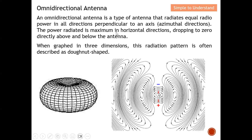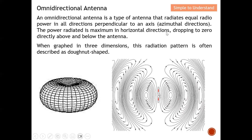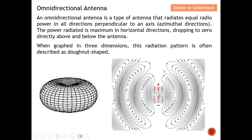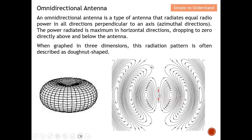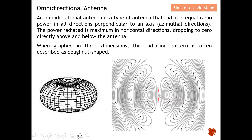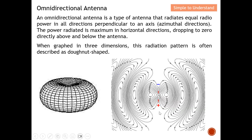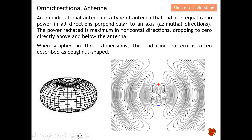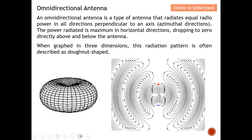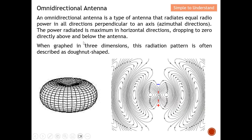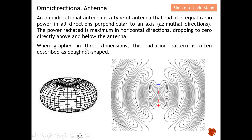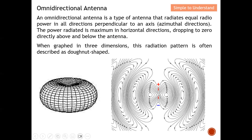The power radiated is maximum in the horizontal direction, dropping to zero directly above and below the antenna. You can see almost nothing on top of the antenna and nothing below it. When graphed in 3D, this radiation pattern is often described as a donut shape.